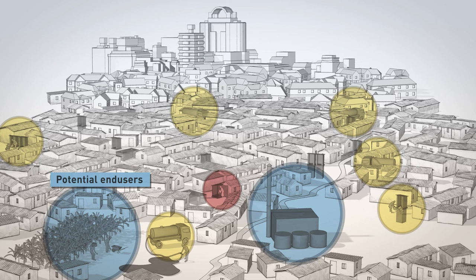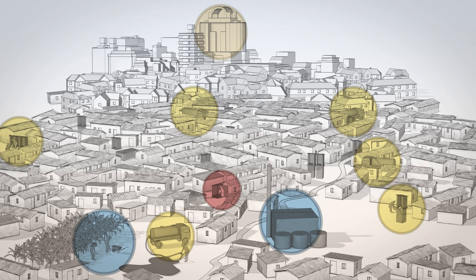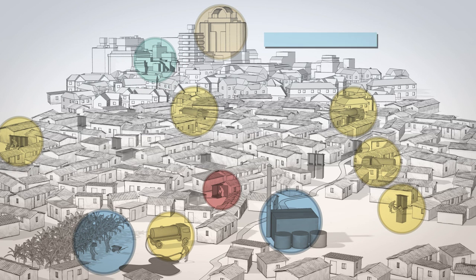You have then the stakeholders directly linked to the government, which we may call institutions. Among them, you have the utility, sometimes named so because they still don't have fecal sludge on their agenda. We have the municipal authorities, which include the technical services and the police. On a higher level, you have the regional and national authorities, which may play a role especially for legal and regulatory matters.